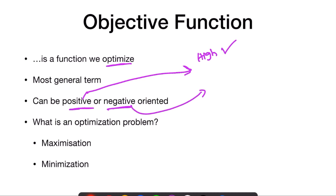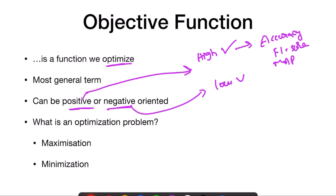Negative oriented means if the value is low, it is good. Examples of positive oriented values are accuracy, F1 score, and MAP. If the accuracy is high, the model is good; if the F1 score is high, the model is good.